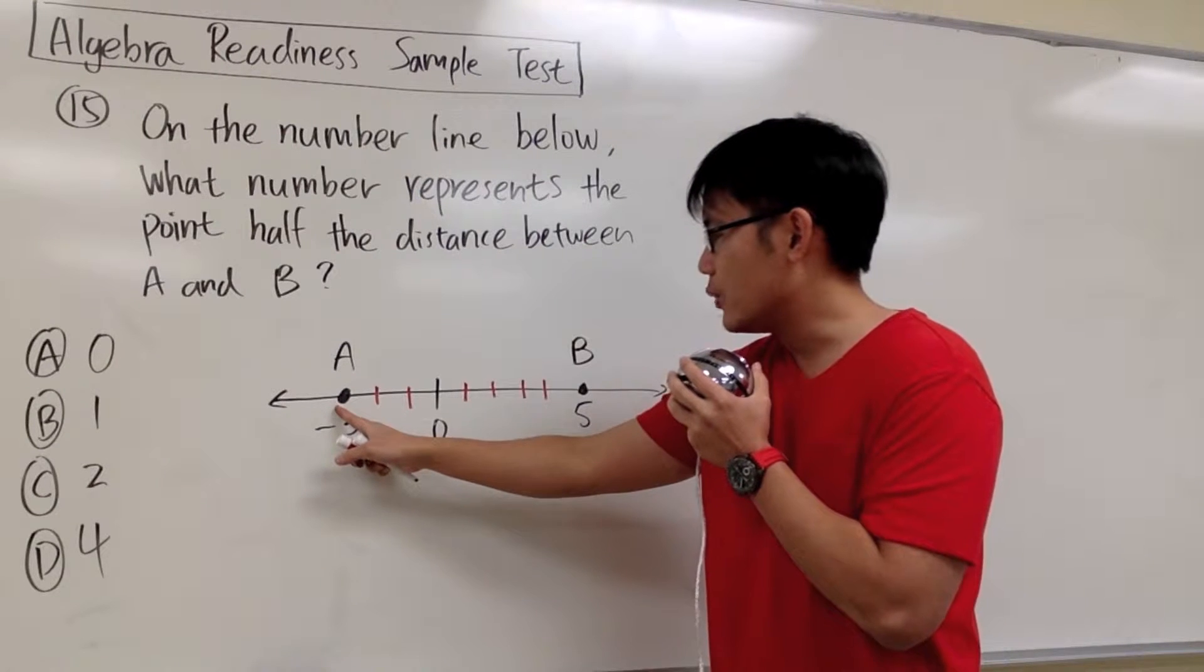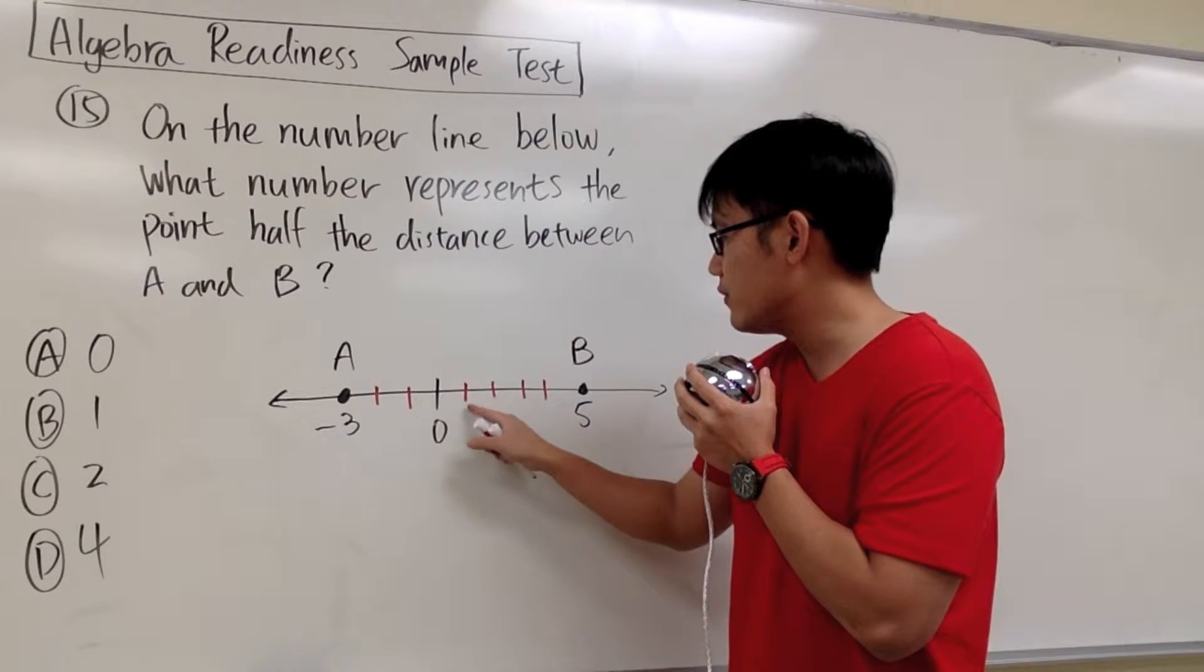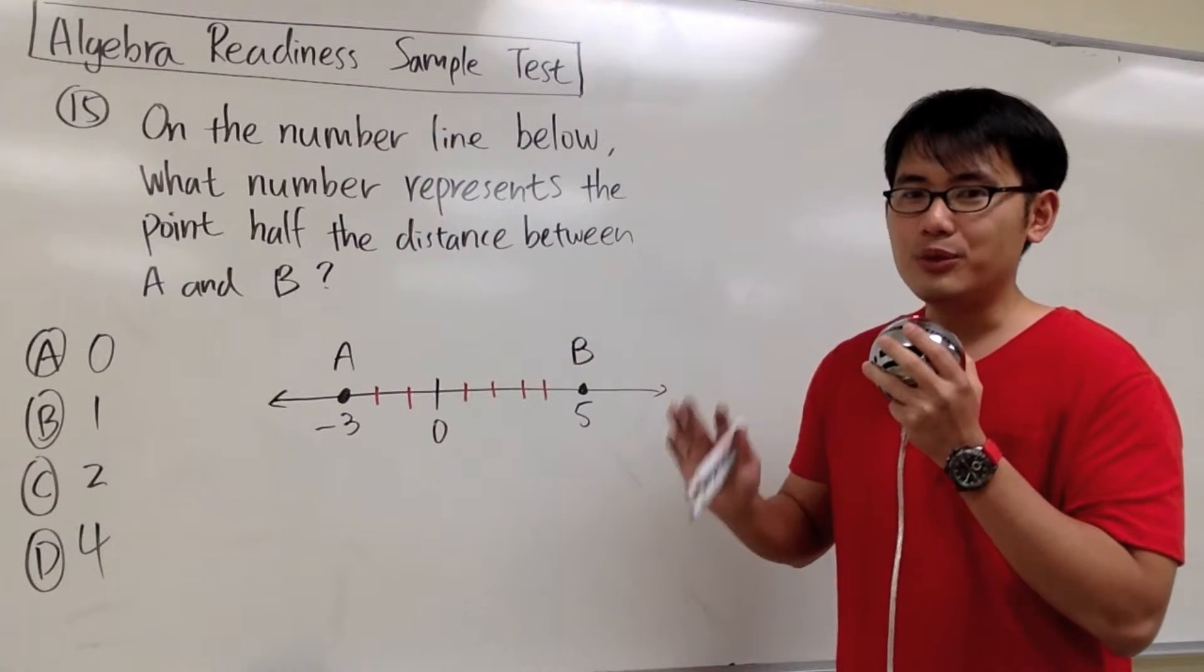Anyways, starting from A, we count 1, 2, 3, 4, 5, 6, 7, 8—8 units